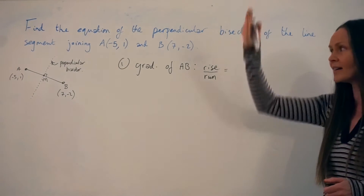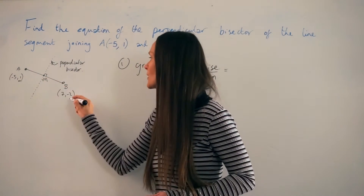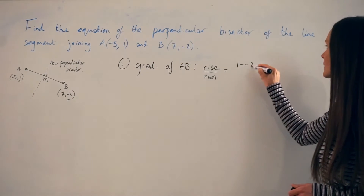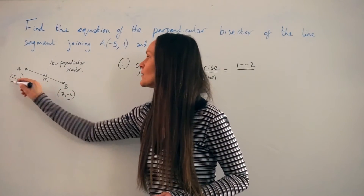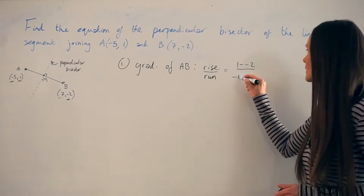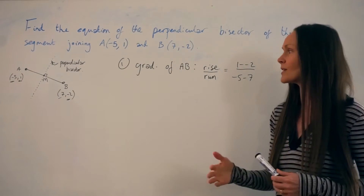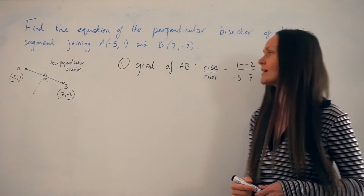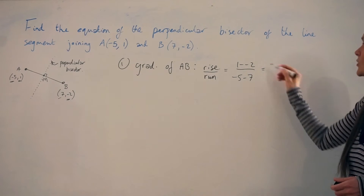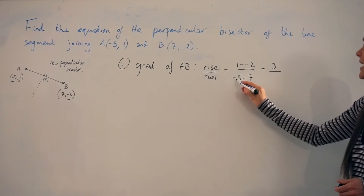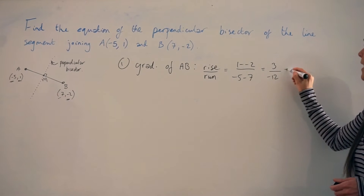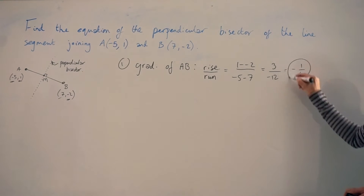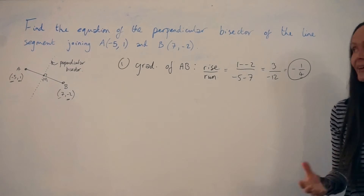I'm going to start with the rise — the Y values. Remember, we're subtracting because we're working out the difference. So I'm going to do 1 take away negative 2, then divide by the difference in the X values: negative 5 take away 7. It doesn't matter which way around you subtract these points — if you did B minus A coordinates, you would get exactly the same gradient. So: 1 take away negative 2 is the same as 1 plus 2, which is 3. And negative 5 take away 7 is negative 12. Both numbers are divisible by 3, so we can simplify the fraction and we get negative 1/4. So this is the gradient of the line AB.